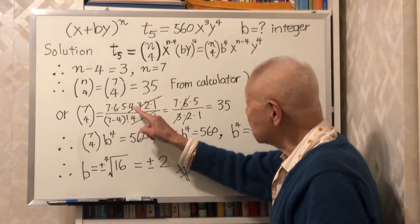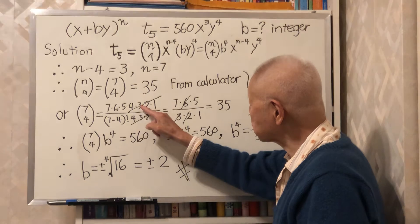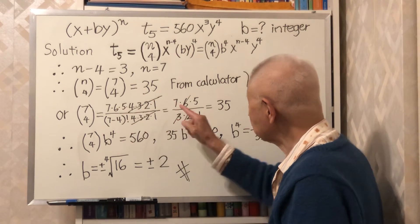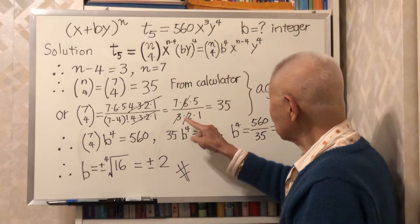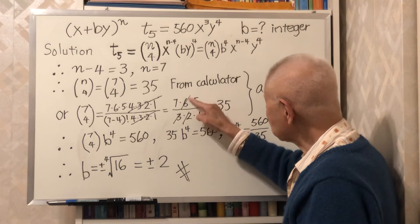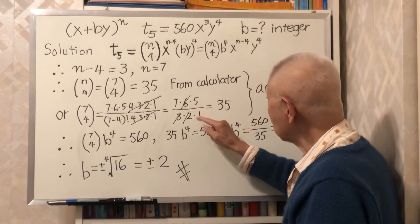The numerator, after you cancel 4, 3, 2, 1, you have 7, 6, 5. 3 times 2 is 6, so 6 cancels these.